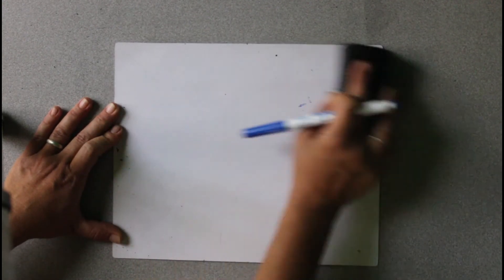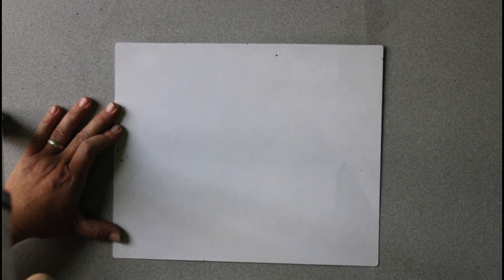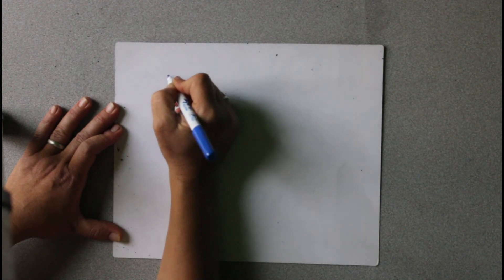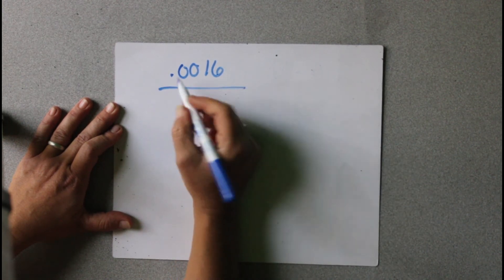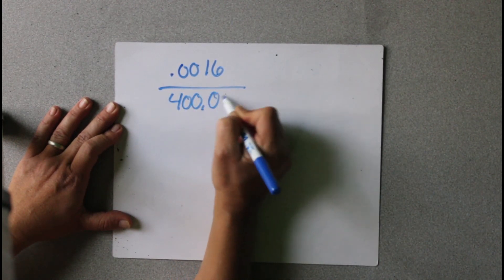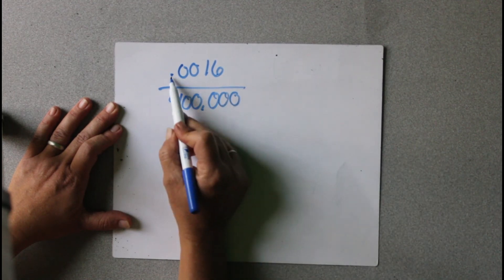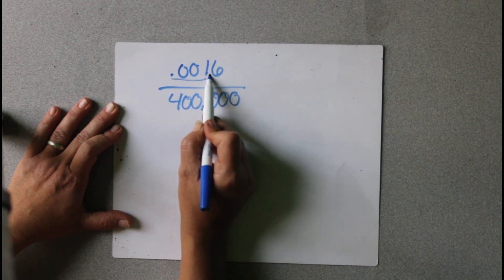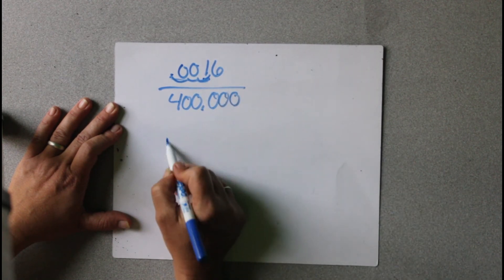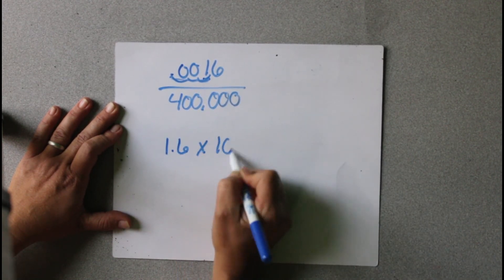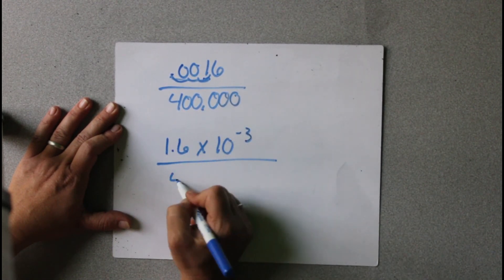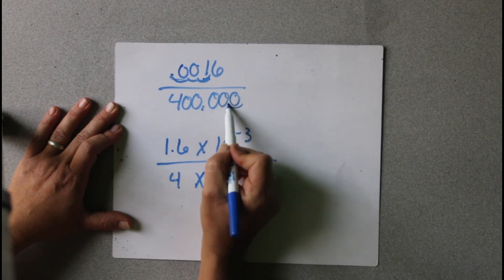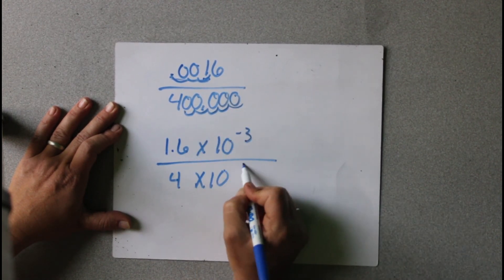I'm going to do a couple of examples involving division. The first one is 0.0016 divided by 400,000. First, we're going to turn this into proper scientific notation. We put our decimal there — that's 1, 2, 3 spaces. So 1.6 times 10 to the negative 3rd. We're going to divide that by 4 times 10 to the 5th.